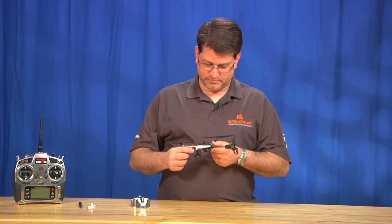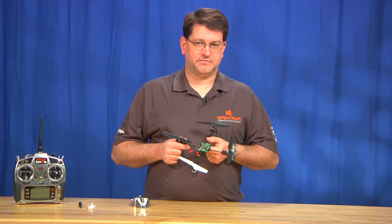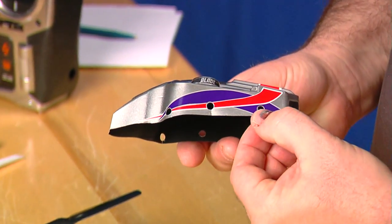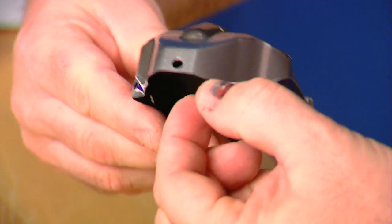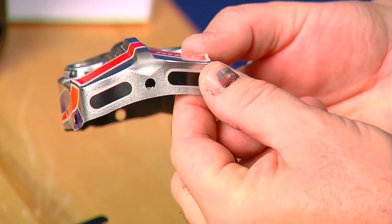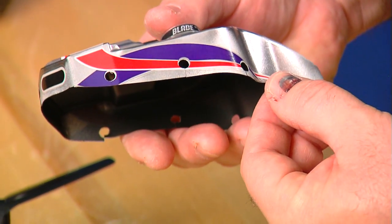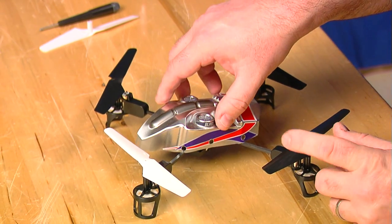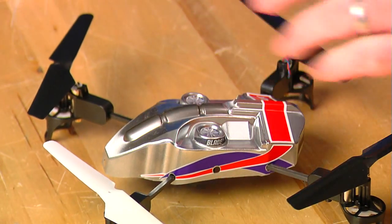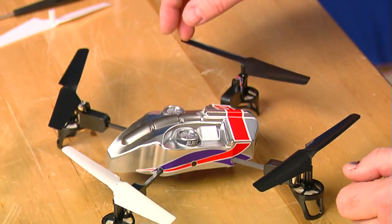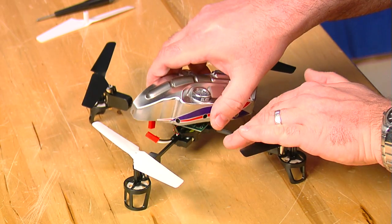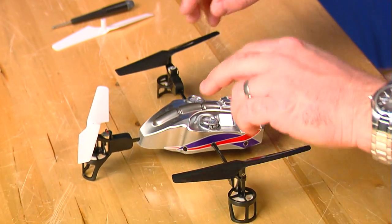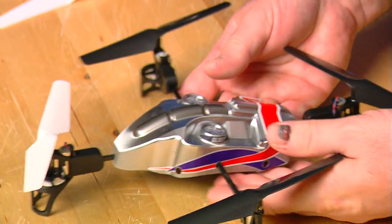Now the final thing to change here to move the unit from X configuration to plus configuration is to put the canopy on. On the canopy, what you'll notice is there's several holes in it. Okay, there's three holes on each side, one on the front, one on the back, and then three holes down the other side, same as the first side. And what that allows is, if you're going to fly in X configuration, you're going to use four of the holes to snap it on like it was before. And it's basically just push the canopy down onto it like so. Now if you want to go to plus configuration, what you're going to do is you're going to turn the canopy 45 degrees counterclockwise so that it's lined up with this white prop. And now you're using the front and the back holes so that it's ready to fly in plus configuration.